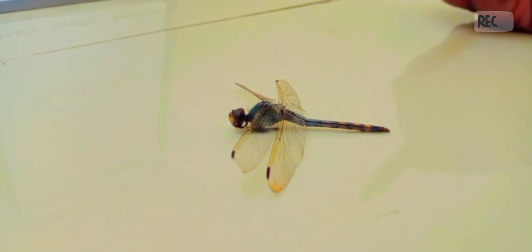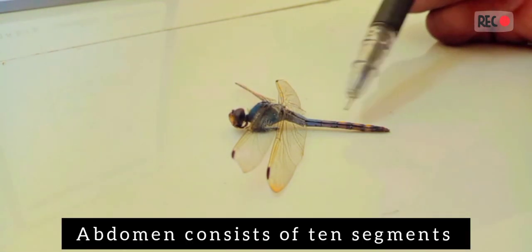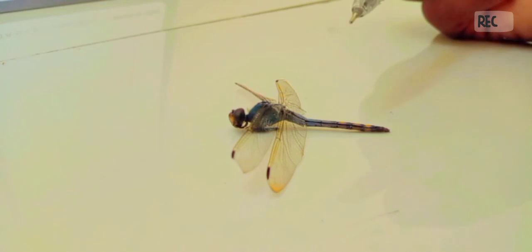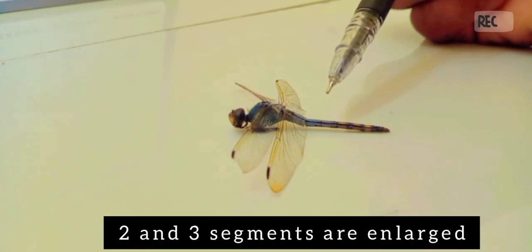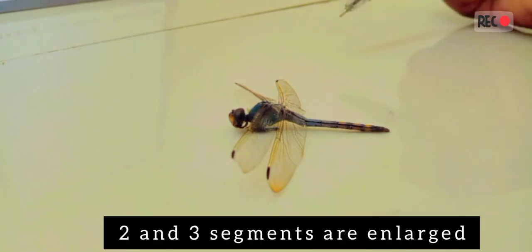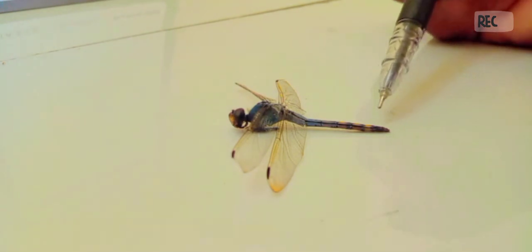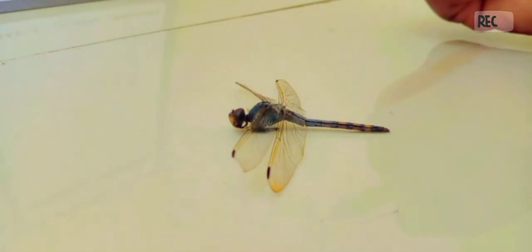The second and third segments are enlarged. Sperm is produced in the ninth segment and is transferred to the secondary genital formation. Dragonflies lay their eggs in the water.